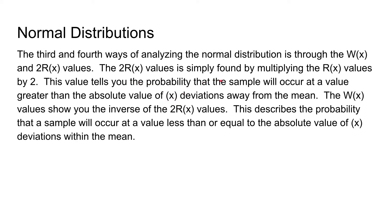The third and fourth ways analyzing the normal distribution is through the uppercase W values and the 2R values. So the 2R values is simply found by multiplying the R values that we previously discussed by two. And so this value tells you the probability that the sample will occur at a value greater than the absolute value of x deviations away from the mean.